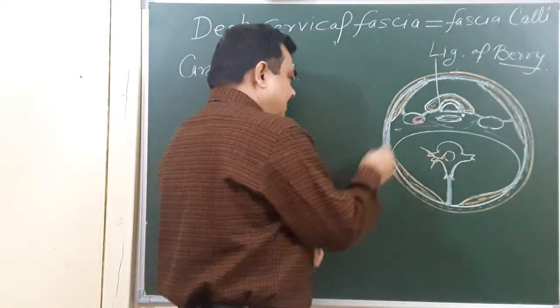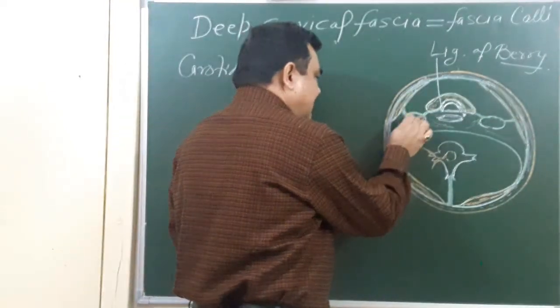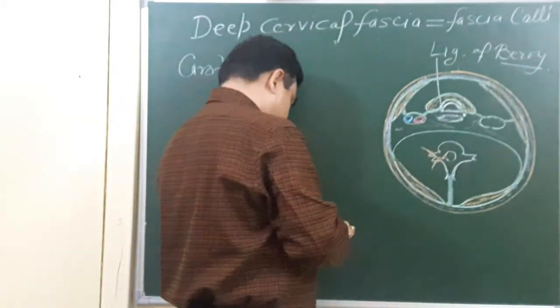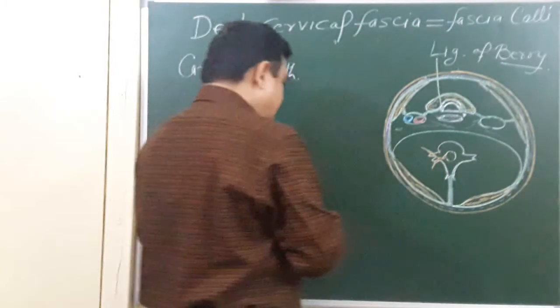The common carotid artery is on the medial side. On the lateral side there is the internal jugular vein. If you enlarge this diagram...